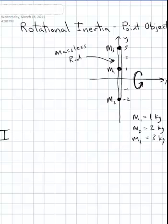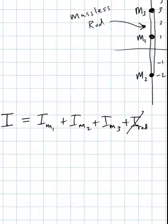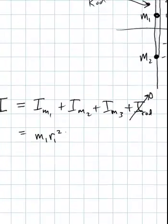The rotational inertia of the system, I, is equal to the rotational inertia of each of its components. Now the rod is massless, so it has no rotational inertia. So we'll just add up the rotational inertia of each of the individual point objects. And for a point object, it's MR squared, where R is the distance from the object to the axis of rotation.